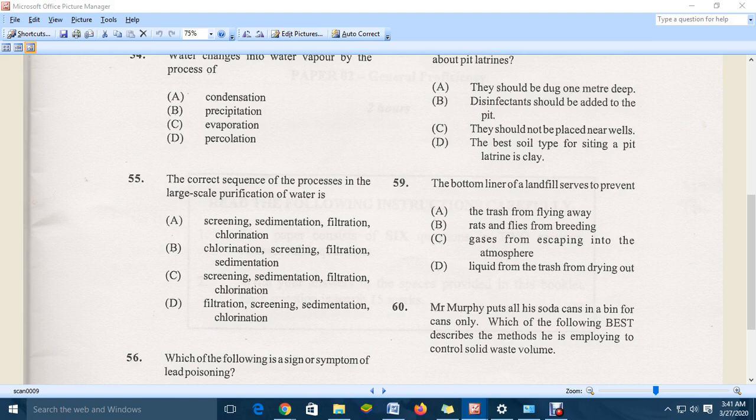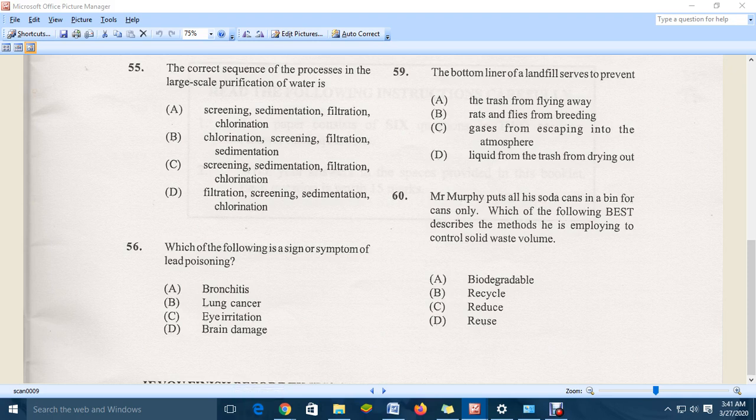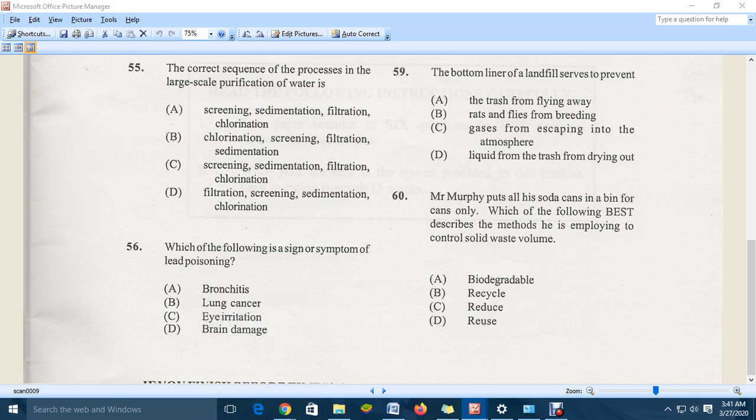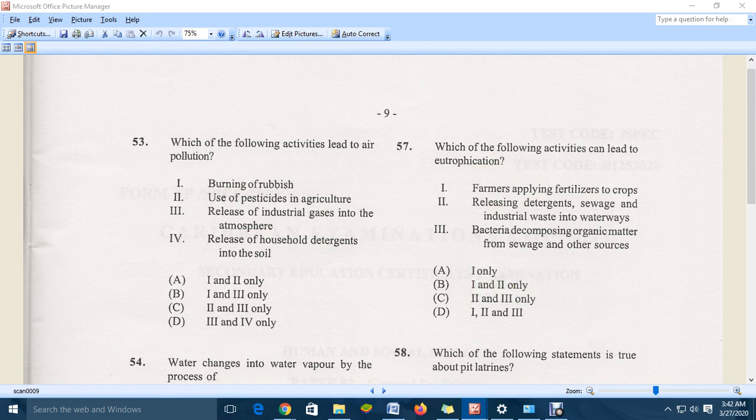Let's move down to question 56. Which of the following is a sign or symptom of lead poisoning? And the correct answer is D. So lead poisoning will affect the nervous system, so brain damage. Move up to question 57.